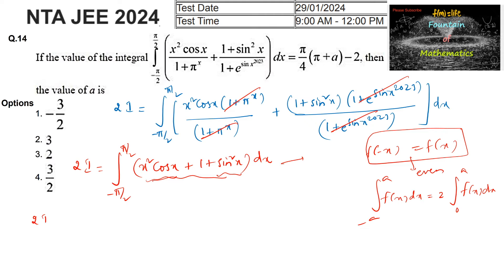So 2I = 2 × ∫_0^{π/2} [x² cos x + 1 + sin²x] dx. Let us evaluate each integral separately.